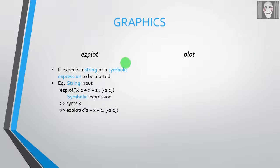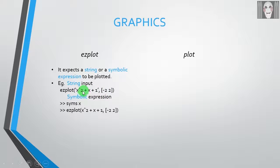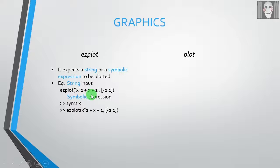When you have a string input to your ezplot, this is the syntax: it begins with the ezplot keyword followed by parenthesis, and within it there is the string input. This is followed by the x-axis limits, or the limits of the variable which you have used.